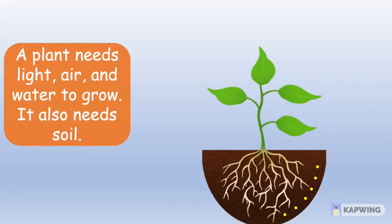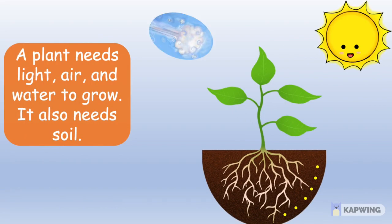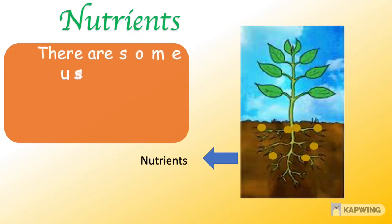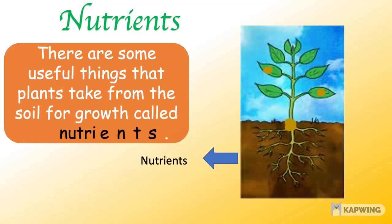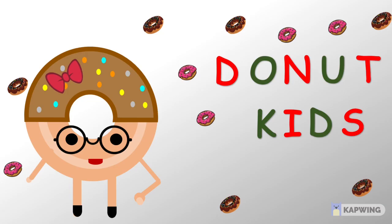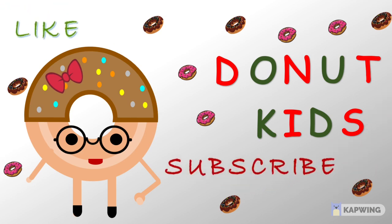What does a plant need to grow? A plant needs light, air, and water to grow. It also needs soil. There are some useful things that plants take from the soil for growth, called nutrients. If you liked this video, please like, subscribe, and share. Thank you!